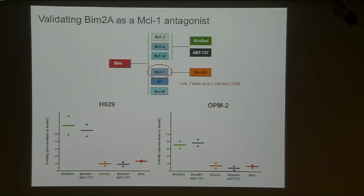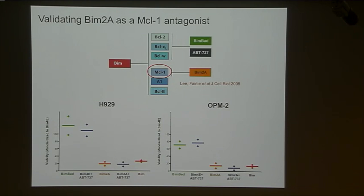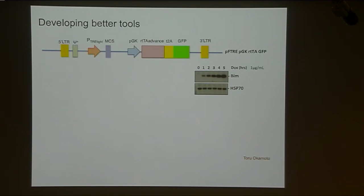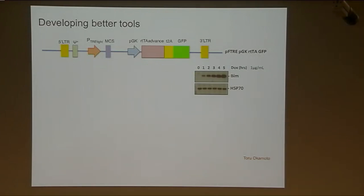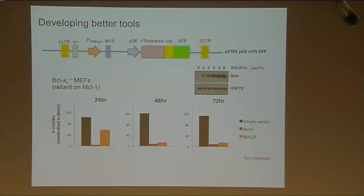The first thing Freya did was to validate BIM2A as an MCL1 antagonist, using two multiple myeloma cell lines known from genetic studies to be MCL1-dependent. If you overexpress BIM — which takes out all the pro-survival proteins — these cells die compared to an inert variant, BIM4E. The critical question was whether these cells were also sensitive to BIM2A, the MCL1 antagonist, and they were. Toru also generated a series of vectors including a dox-inducible system that allowed expression of the gene of interest, in this case BIM, when doxycycline was added.